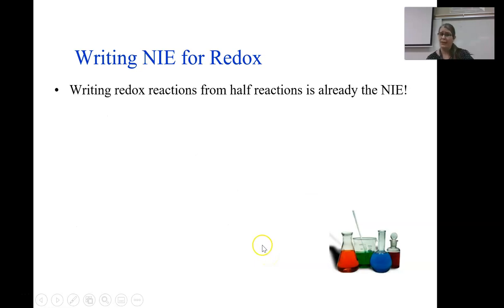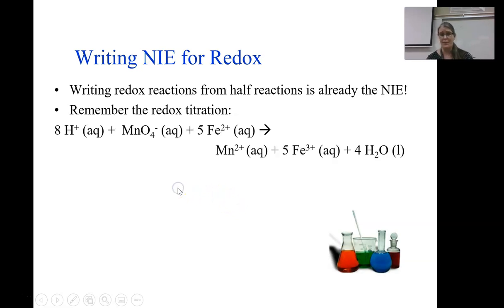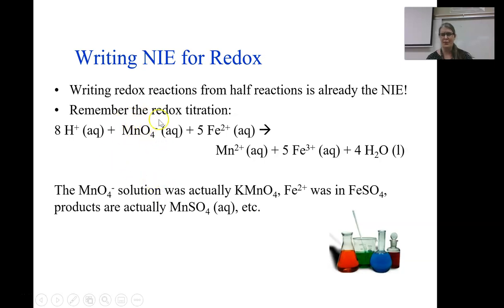One thing to remember is that writing redox reactions from a half reaction, you're really already working with the net ionic equation. Remember our redox titration. We had this reaction that we used to do the stoichiometry. Well, the manganese solution wasn't just permanganate ions floating around. It was potassium permanganate. And you see there's no potassium ion here because it's a spectator ion. It's been removed.